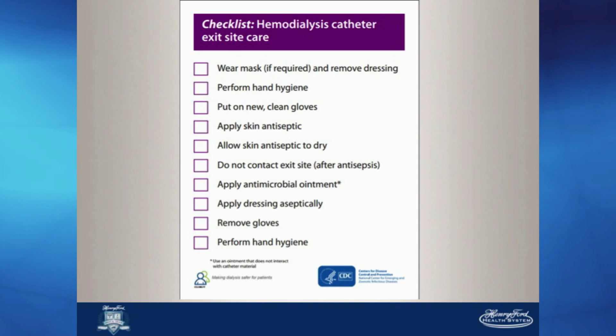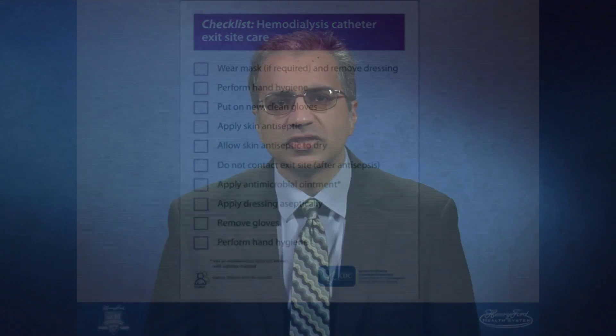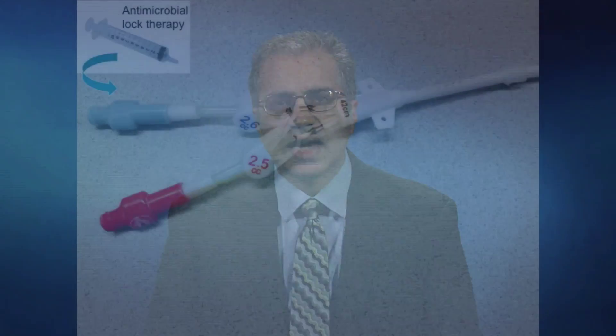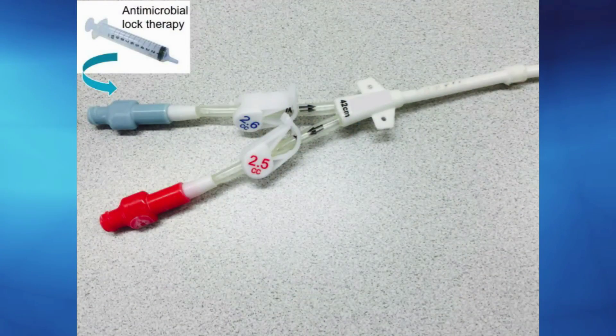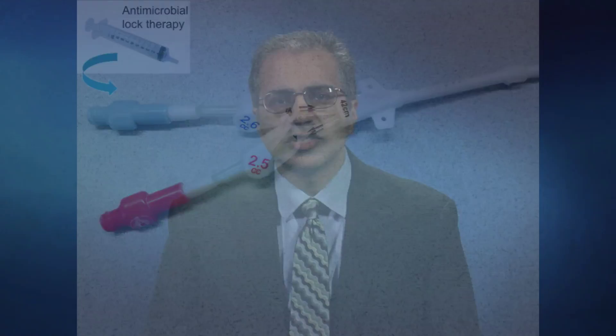When conservative measures fail to prevent infections in a high-risk population, antimicrobial lock therapy should be considered as an option to combat catheter-related bloodstream infections. This has been used both for treatment involving catheter salvage and for prophylaxis to prevent infection.